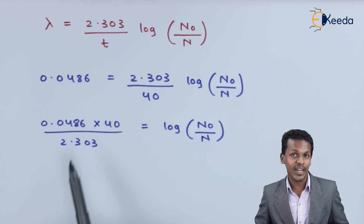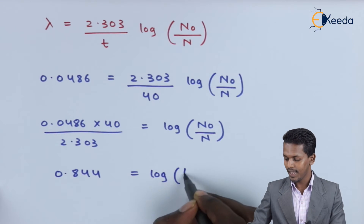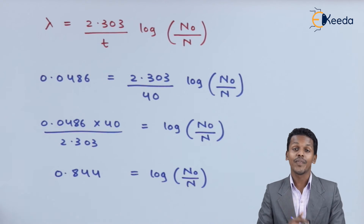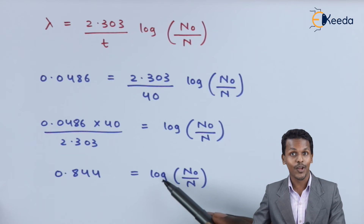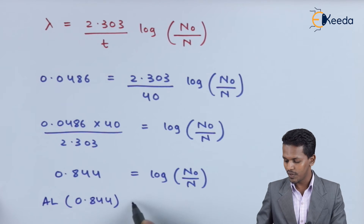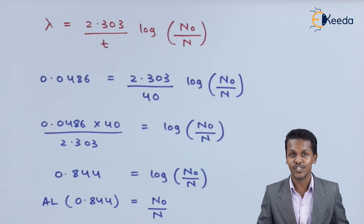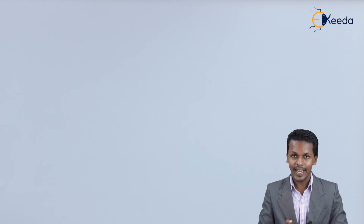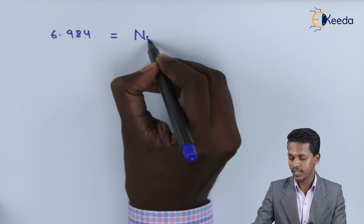After calculation, 0.0486 multiplied by 40 divided by 2.303 gives 0.844, which equals log base 10 of N₀ divided by N. Taking the antilog of 0.844, we get the ratio N₀ divided by N equals 6.984.